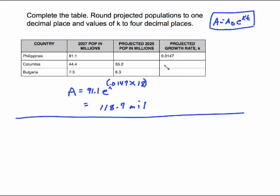One of these where I have to find K. So it is 55.2 going in for A, 44.4 going in for A sub zero, E to the K I don't know, but I do know the number of years from 2007 to 2025 is 18. So to solve this, we're going to divide both sides by 44.4. This will be E to the 18 K. So 55.2 divided by 44.4 is 1.24.